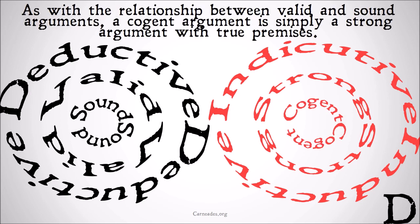Cogent arguments are arguments that have true premises and are also strong. So they have true premises and the truth of the premises would increase the likelihood of the conclusion. A cogent argument is simply a strong argument with true premises.